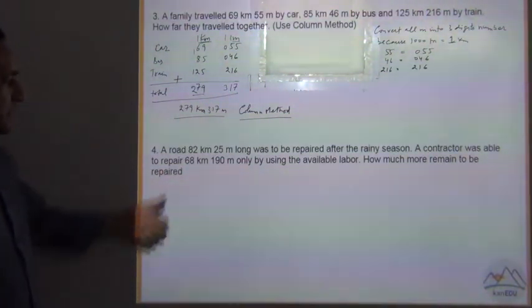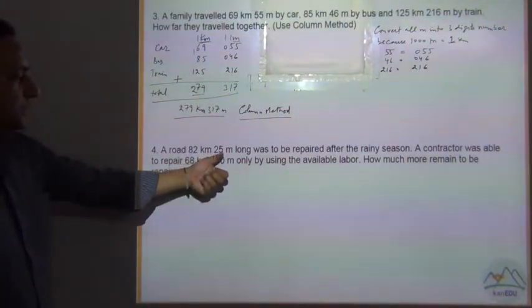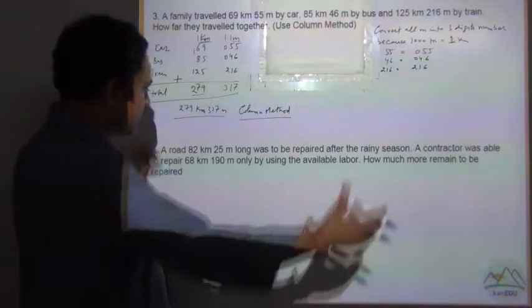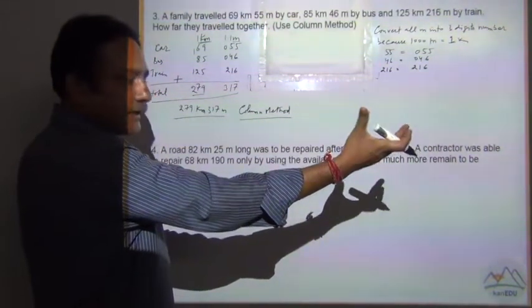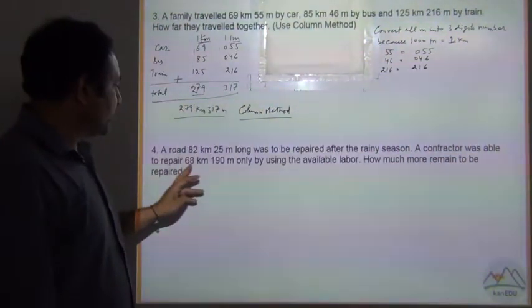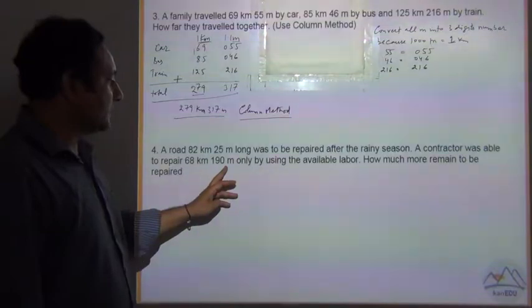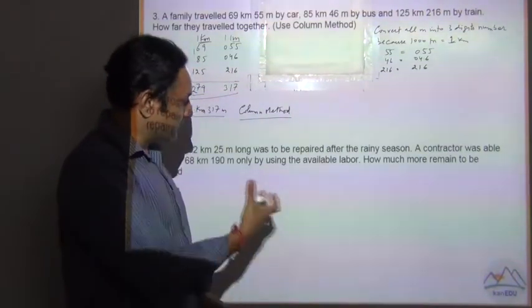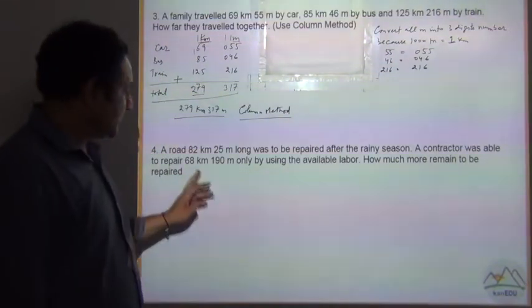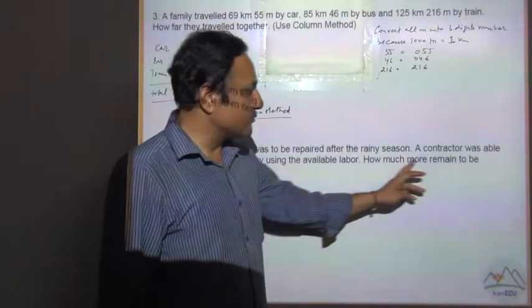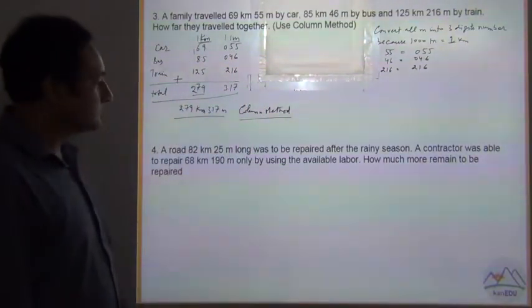Now next question is a road 82 km 25 meter long was to be repaired after the rainy season. So this is the length of this road. A contractor was able to repair 68 km 190 meter only by using the available labor. How much more remained to be repaired?